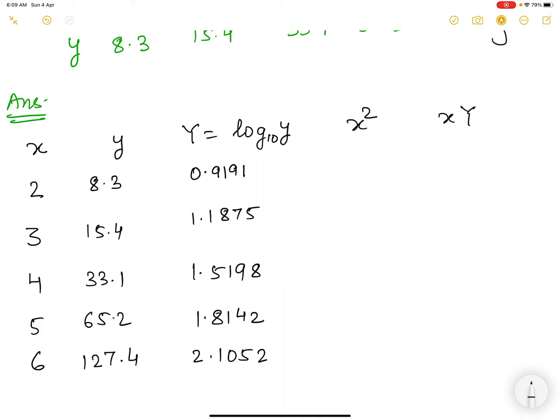Now we have to find x square. So it is 4, 9, 16, 25, and 36. Now we have to multiply small x and capital Y column. Let us multiply. Use your calculator and write the answer. So now I have written it.